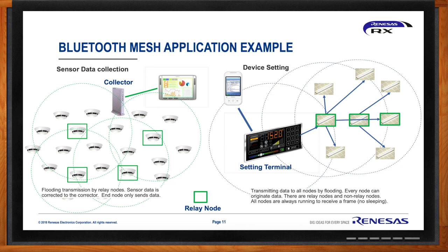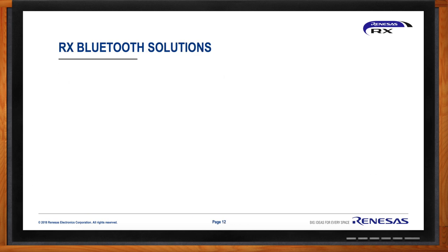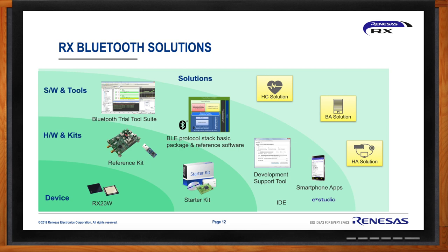What kind of solutions does Renesas offer in this space? We try to make it as easy as possible to get up and started with the RX23W. As we do with all MCUs, we provide a reference kit and a starter kit. The reference kit is a lower-end, more inexpensive kit to get started quickly; the starter kit is a higher-end kit providing full functionality. We have a Bluetooth trial tool suite, a BLE protocol stack that is fully done, tested, and ready to use immediately, development support tools, and smartphone applications. As we move forward, we'll be adding targeted solutions for market applications like home appliance, business automation, and healthcare.